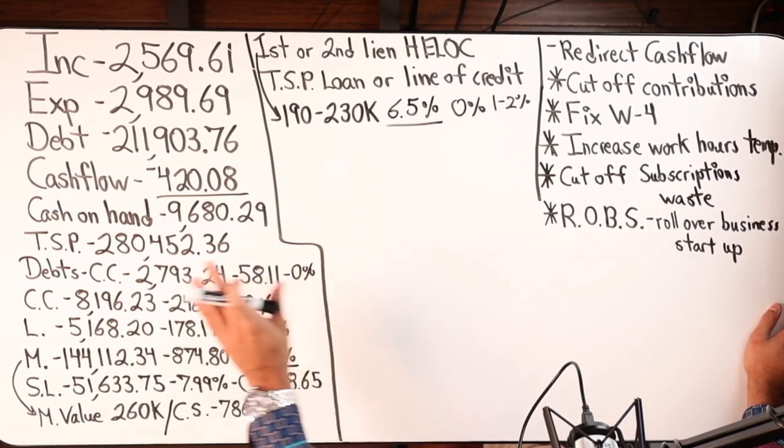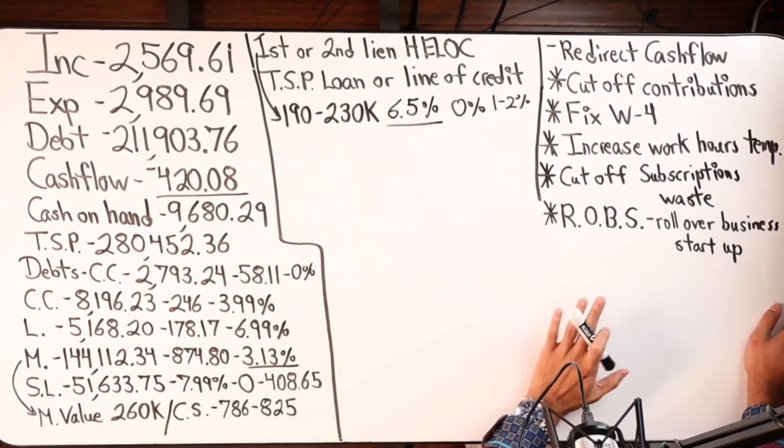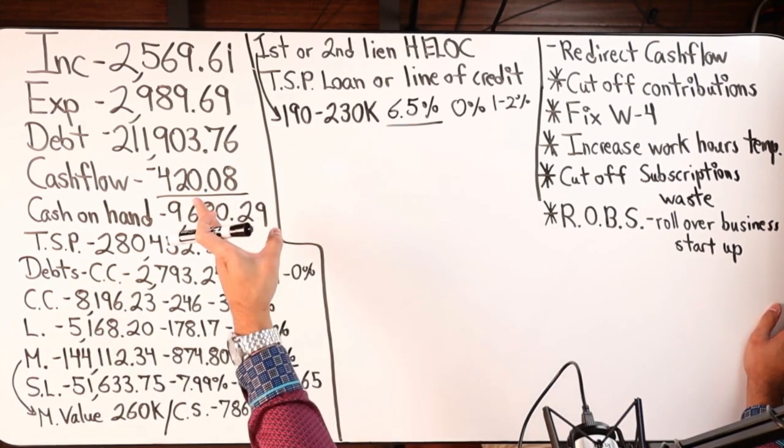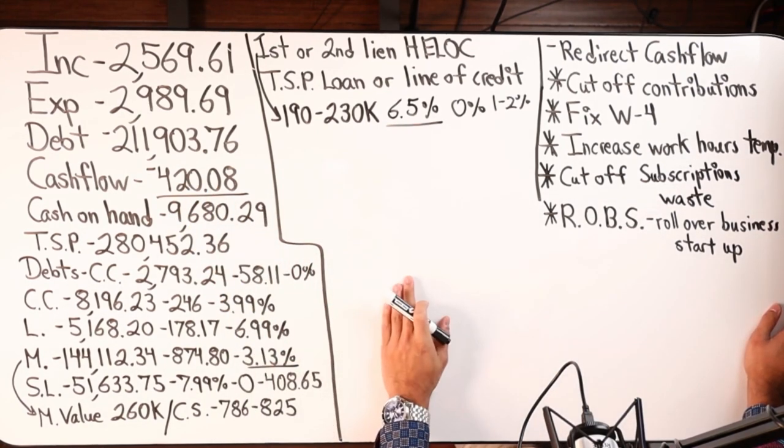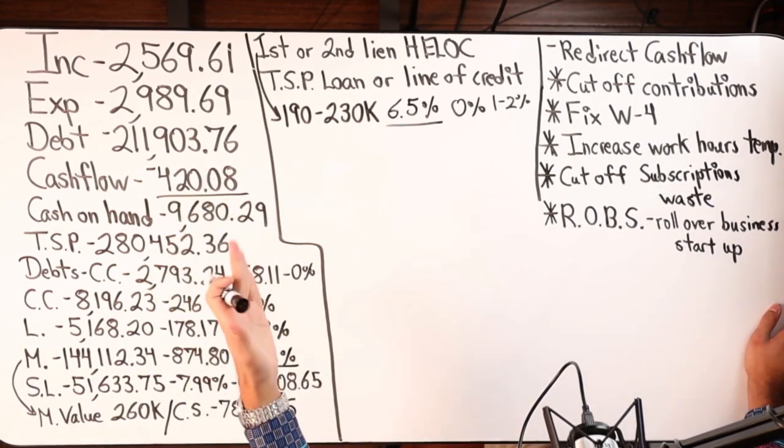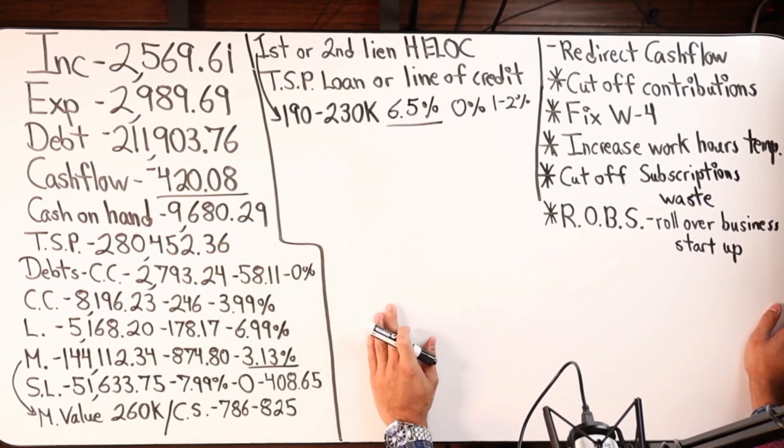But you could roll over that $280 grand into a business startup which could be used to generate cash flow to change the trajectory of this person's finances within six to twelve months. Can provide the capital needed to put this person in a better financial position without having to pay early retirement penalty fees.